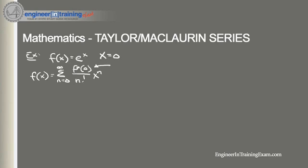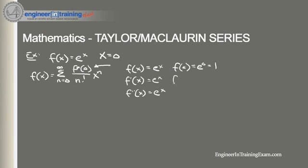First, we need to find the derivatives. f(x) equals e^x, and we know f'(x) equals e^x as well. f''(x) also equals e^x. All the derivatives are always going to be e^x. Next, we evaluate at 0: f(0) equals e^0 equals 1, f'(0) equals e^0 equals 1, f''(0) equals e^0 equals 1, and so on. So we can quickly determine that the general f^(n)(0) is equal to 1.